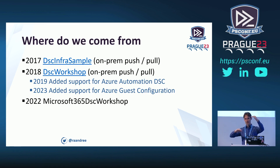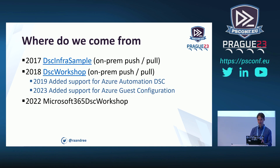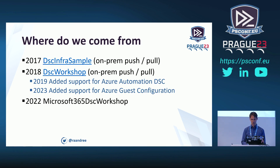The further down in the hierarchy you go, the more everything is the same — cattle — while higher up toward individual servers you have pets. We want to act on the cattle side as much as possible. We built on this initial idea in the DSC Workshop that we started in 2018, joining forces into one big project. We added Azure Automation DSC support in 2019, and this year also Azure Guest Configuration support.